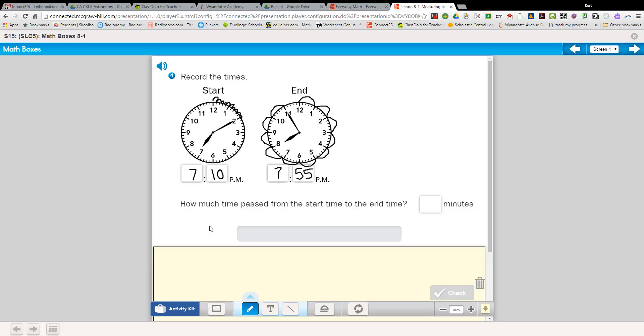Now the next question says, how much time passed from the start time to the end time? Well, this clock had 55 minutes on it, but it didn't start here. It started 10 minutes after the hour. So I could get my little eraser and erase 10 of these minutes. That was some of the minutes. Now I could recount the minutes to tell the difference between 7:10 and 7:55. So I could just go 5, 10, 20, all the way around, and then write that in here. Now let's look at box 5.